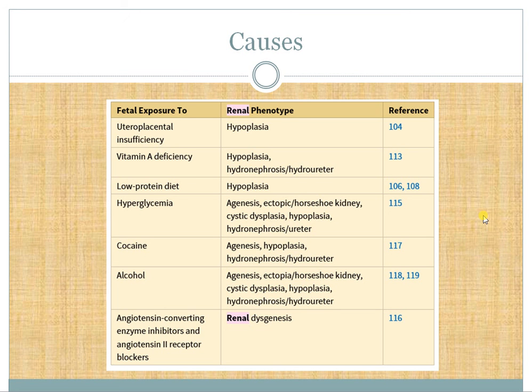Hyperglycemia can lead to agenesis, ectopic kidneys, horseshoe kidneys, cystic dysplasia, and ureteral anomalies. Cocaine use is another cause, given widespread drug abuse. Alcohol intake is another reason alcohol is contraindicated during pregnancy. Importantly, ACE inhibitors are contraindicated in pregnancy as they cause renal dysgenesis — this is a board exam question.